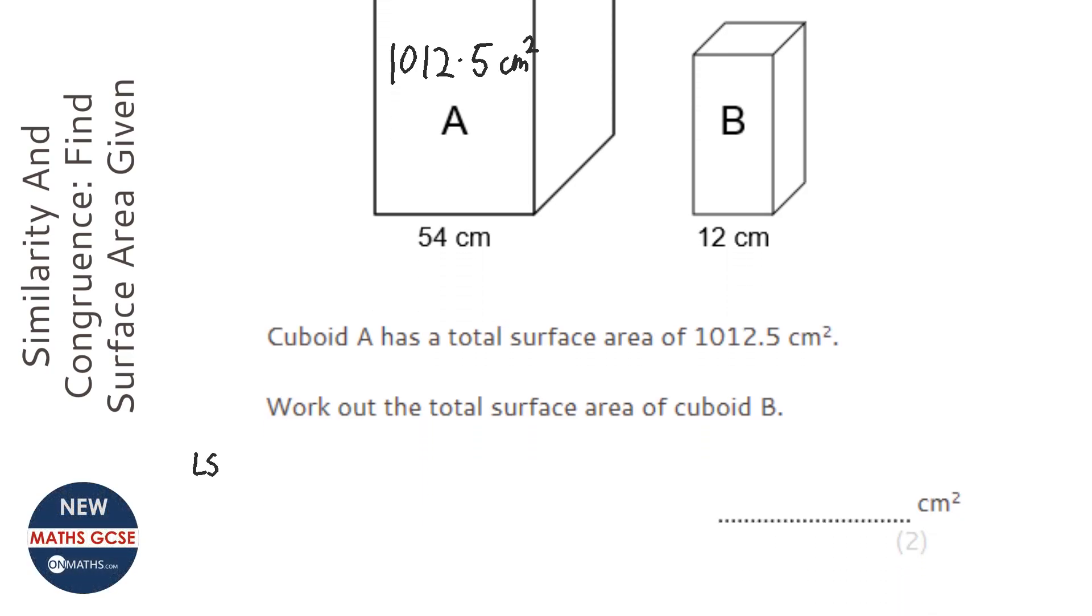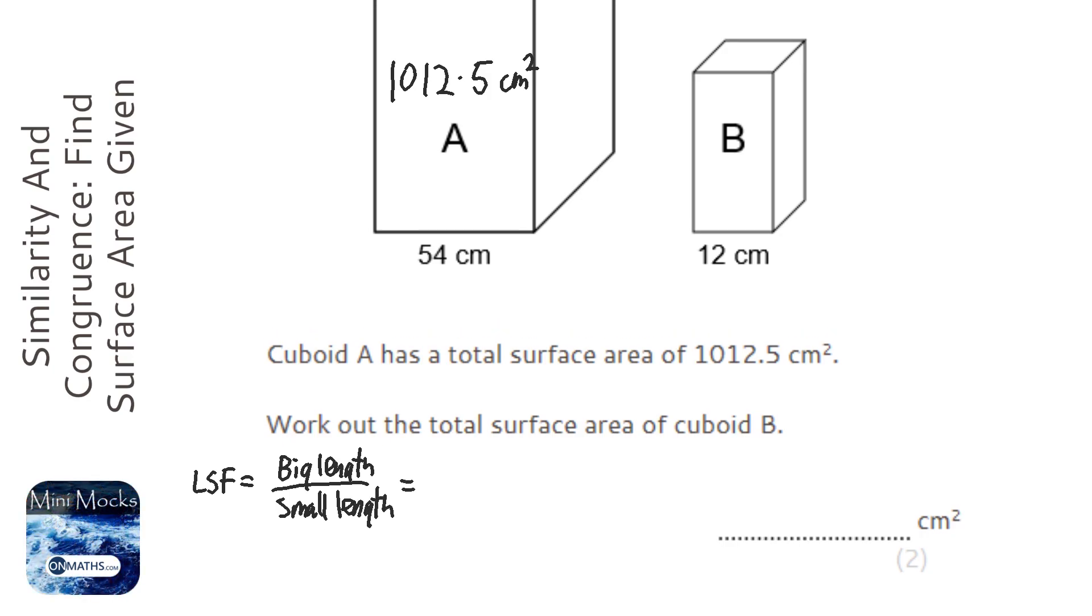The way to do this is to work out the linear scale factor first, which is big length over small length. The two lengths need to be corresponding, so they need to be the same location.